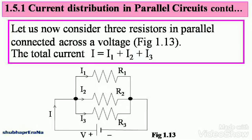Let's consider three resistors in parallel connected across a voltage. You can see that in figure 1.13. Note down the figure here. The total current I is equal to I1 plus I2 plus I3.